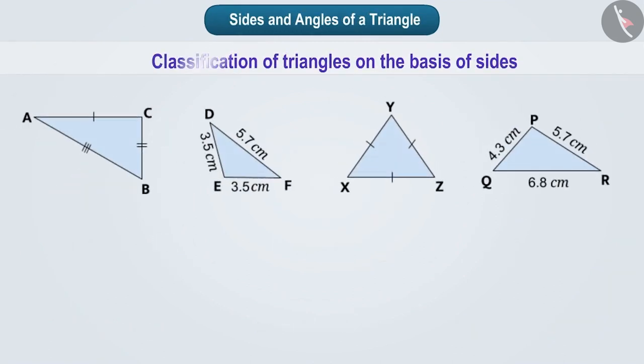Now will you be able to classify the given triangles on the basis of its sides? Try it. Let us tell you. These different signs on the sides of triangle ABC tell us that the 3 sides in this triangle are not equal. So it is a scalene triangle.